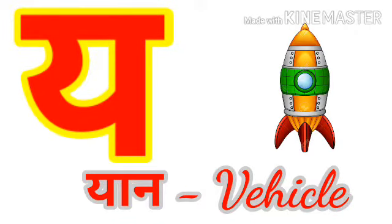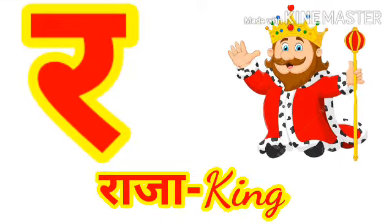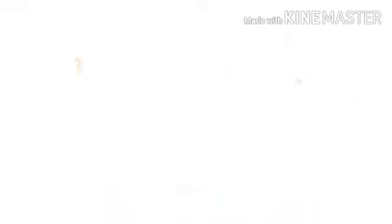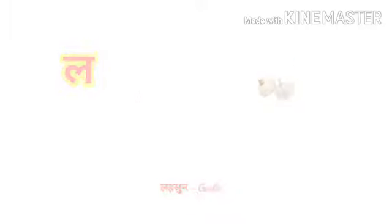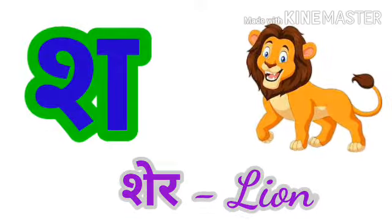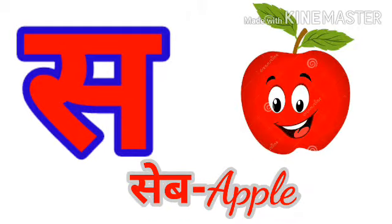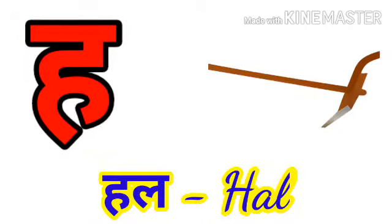Ya say Yan — Yan means Vehicle. Ra say Rajah — Rajah means King. La say Lahasun — Lahasun means Garlic. Va say Veena — Veena means Veena. Sa say Sheer — Sheer means Lion. Sa say Shatkon — Shatkon means Hexagon. Sa say Syeb — Syeb means Apple. Ha say Hull — Hull means Plough.